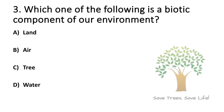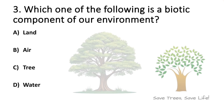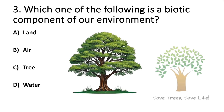Question number 3. Which one of the following is a biotic component of our environment? Option A: Land. Option B: Air. Option C: Tree. Option D: Water. So the answer is option C, Tree.